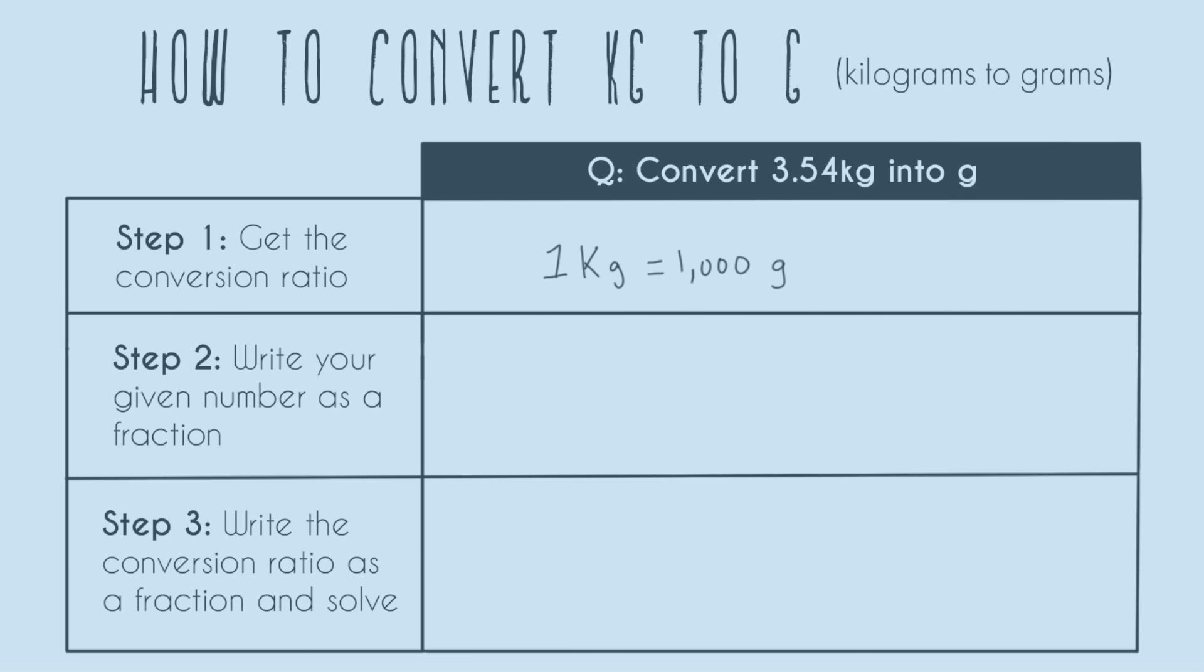The prefix kilo means that your base unit, it takes a thousand of them just to get to one kilo of whatever your base unit is. In this example it's grams.